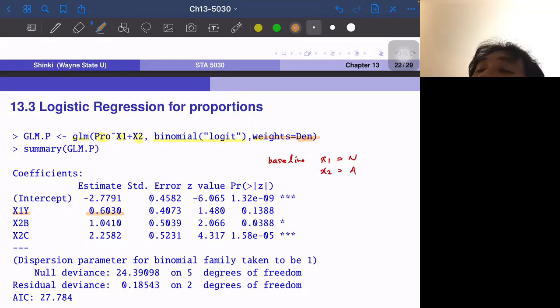And X2 also here, so actually the X2 impact is larger. If X2 equals C, then the success probability is higher and the coefficient is 2.25. So at least the impact is more than three times higher than X1 equals Y. So this case X1 and X2 A is the baseline. Then if we have the information that X2 becomes C, then it has much higher success probability. If X1 equals Y, slightly higher probability.